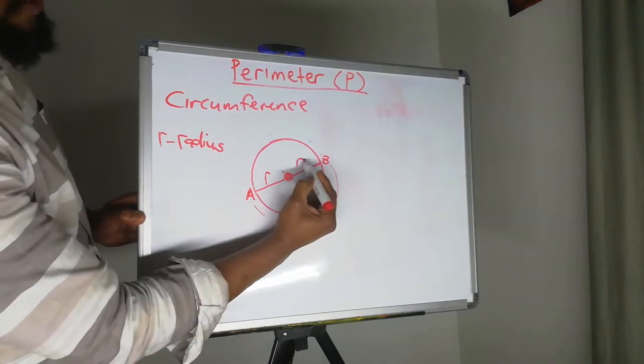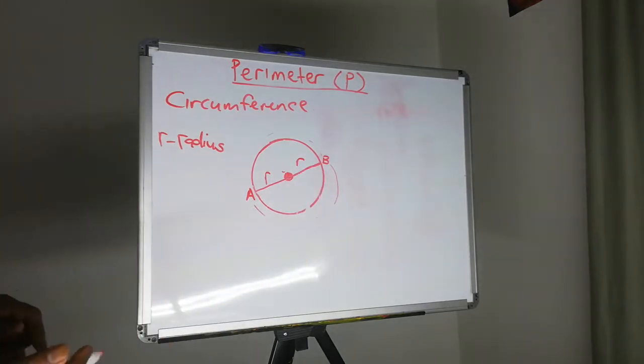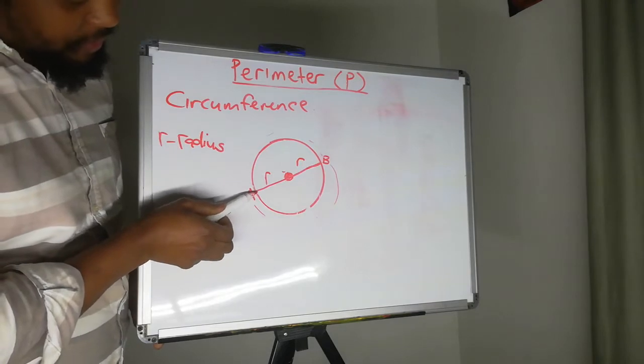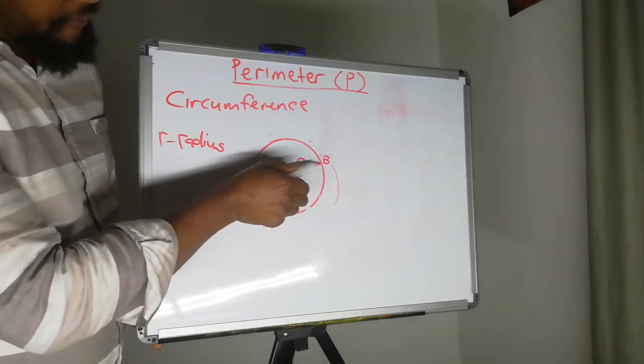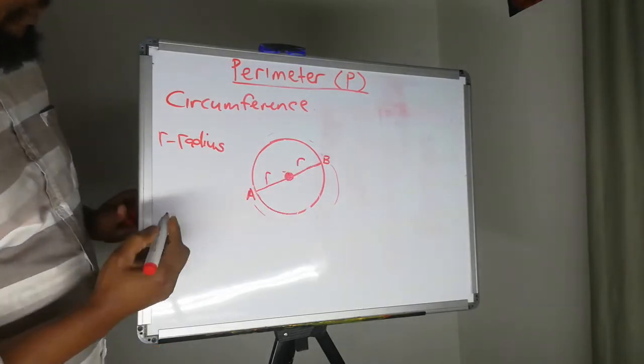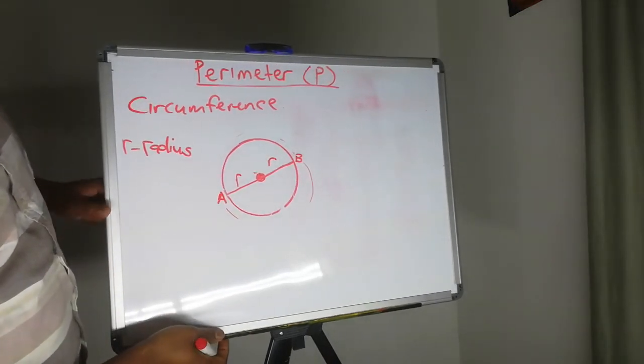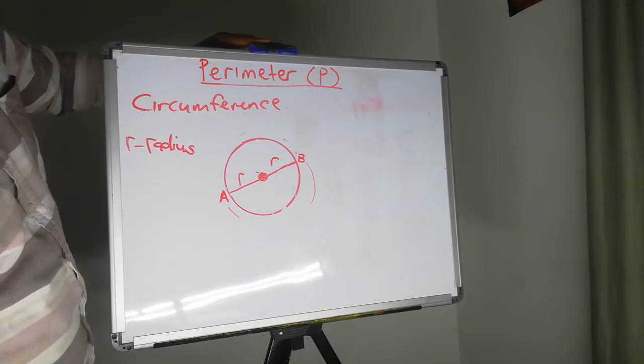And now we have another radius. So we are seeing that what we have done with the circle is that we have cut it into half. And let me just adjust this board. There we go.